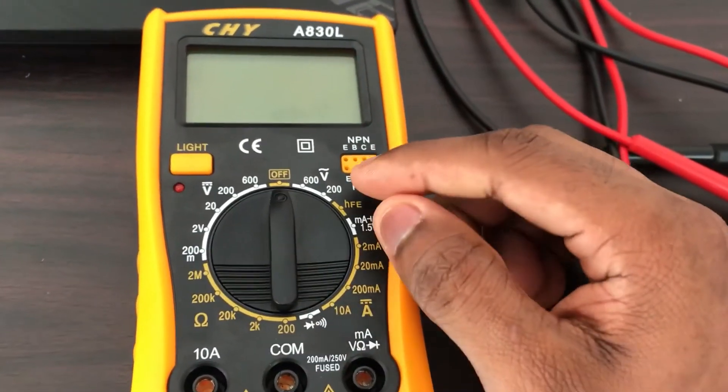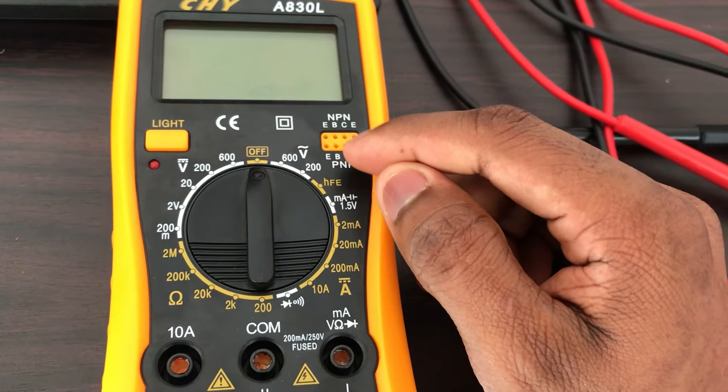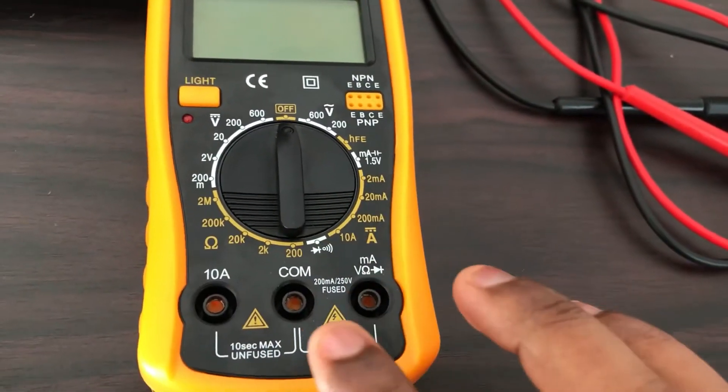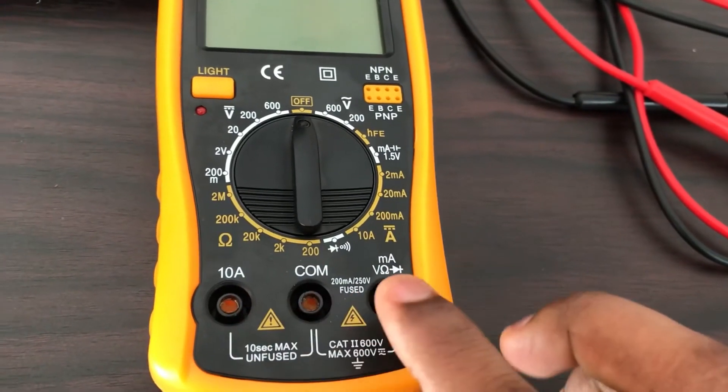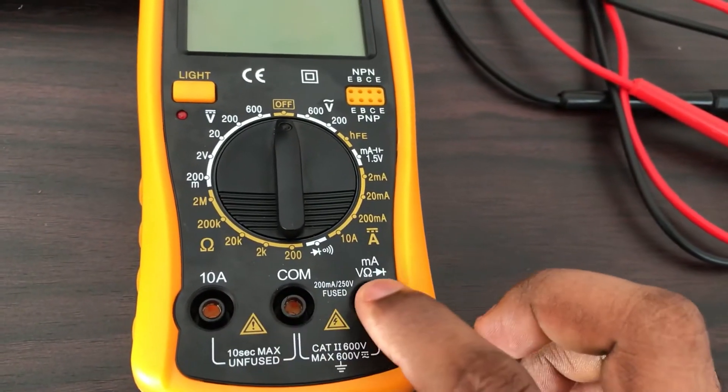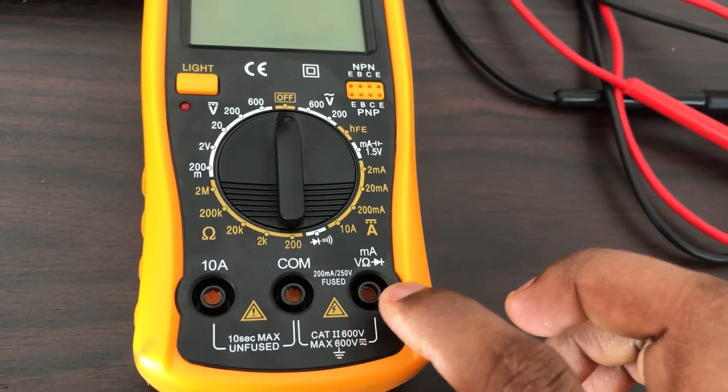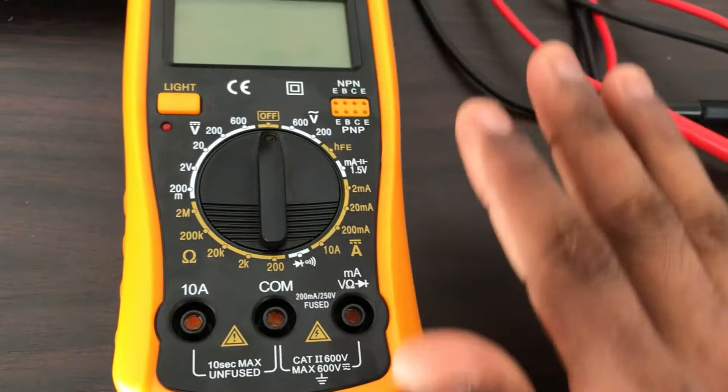Here you see the NPN/PNP transistor port, so you can measure the gain of the transistor. Usually a multimeter will come with three ports: a common port, a typical port for measuring the current, voltage, ohms, and continuity, as well as a 10 ampere port. This is the basic setup.